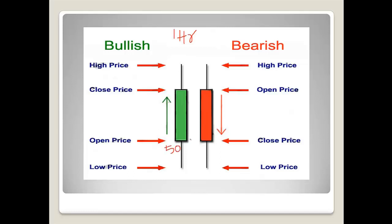In a one-hour chart, let's say the market opened at 50 rupees. In that one hour, it came all the way down to 45, then moved all the way up to 60, and at the end of the one hour it closed at 55. Since the closing price is higher than the open price, we call this a bullish candle — the buyers were in control of the market during that one hour.